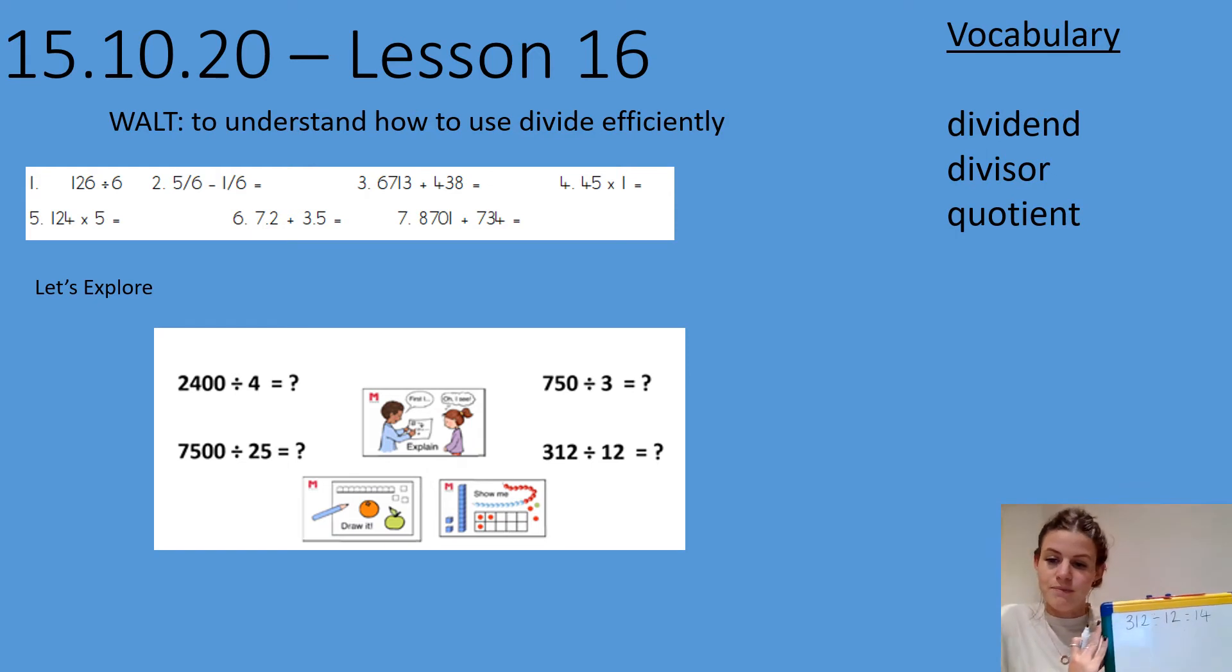This equation uses a slightly different method. So this still uses what we know, but it might get us there a little bit quicker because we're using what we know about our multiples of 12.